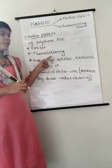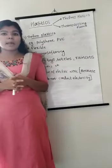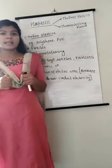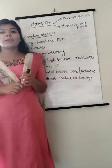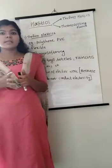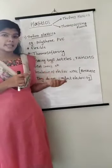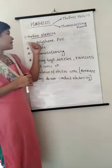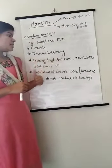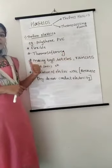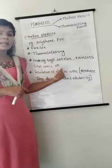On heating, thermoplastics soften and get deformed, so they are also called thermosoftening plastics. For example, when you take a polythene bag and heat it, you can see that it melts. Even if this marker is brought over a flame, you can see it starts melting. Thermoplastics are used for making toys, bottles, rain coats, seat covers, etc., and are also used for making the insulation of electric wires.